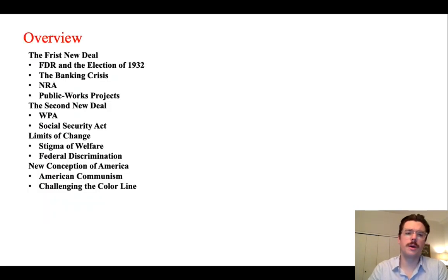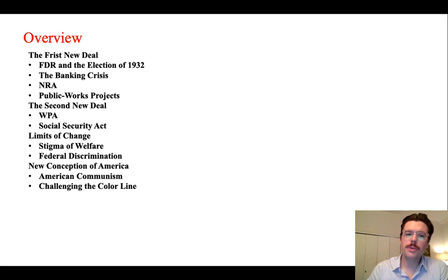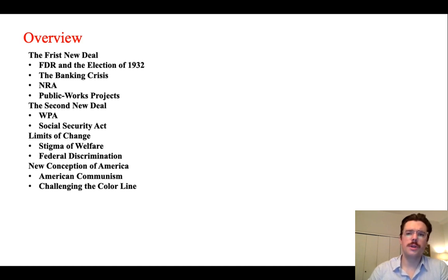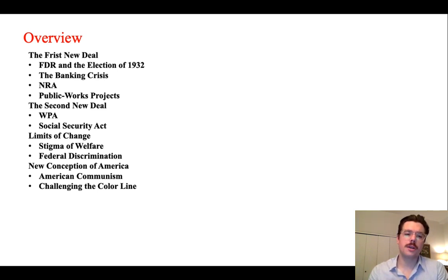During this lecture, we'll talk about the New Deal programs in two distinct phases. The first phase initiated in 1932, building off of some of the reforms implemented by Herbert Hoover. In the second phase, Franklin Delano Roosevelt expanding upon those projects to include and to construct a broad welfare apparatus. Then we'll transition to some of the limits of change based on the political economy and racism in America during that time, as well as the way in which this New Deal project transforms the concept of America.